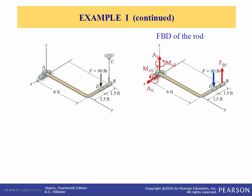Here's the free body diagram of the rod. The thrust bearing can support a load in the y direction, however all the forces are either in the z direction or the x direction, so we don't need that reactive force in the y direction, eliminating one unknown. Counting unknowns: one, two, three, four, five. We have six equations, so we should be able to solve this.